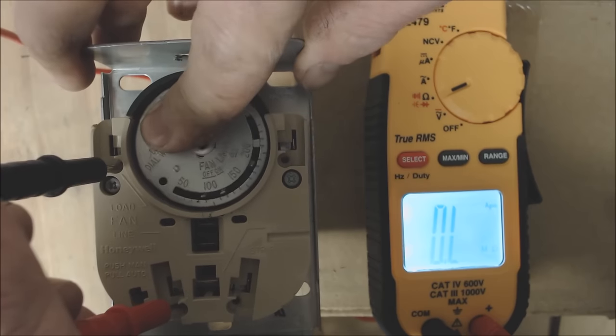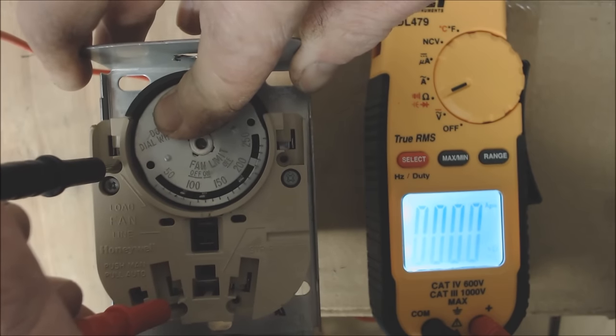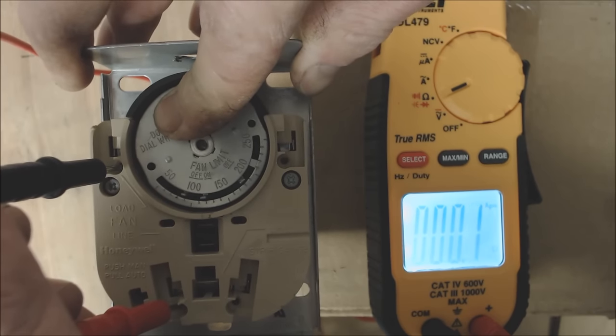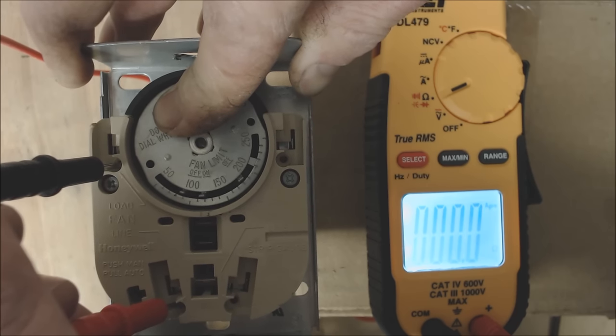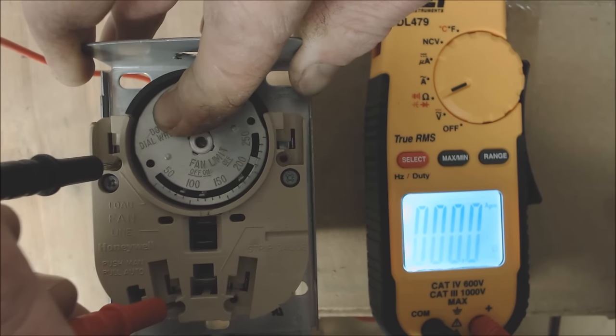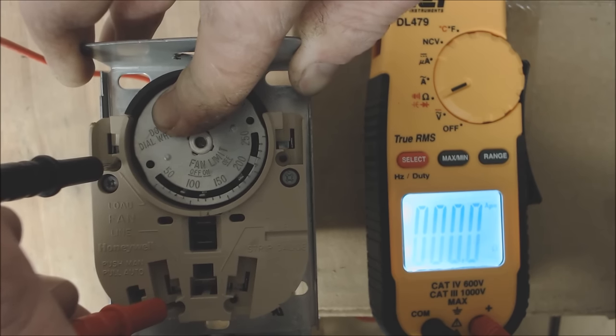Now when we go ahead and turn the dial, this would be as if the fan limit was at 120 degrees. You see that we have 0.0 ohms of resistance, meaning these two connections are now connected. That's when the blower motor can turn on.